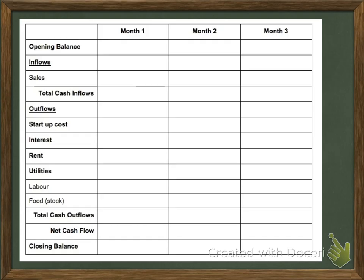One thing that is really important: when you fill it out, you don't do all of January at once, all of February at once. Instead, go by the outflow item or the inflow item across all months. Then do your calculations — total cash inflows and outflows, then net cash flow, then your closing balance and subsequent opening balance. Fill in the inflows and outflows first; it's the quickest and most accurate way to do it.